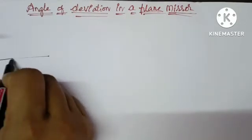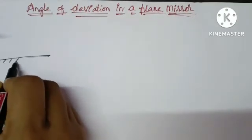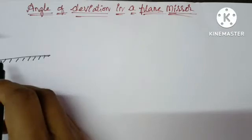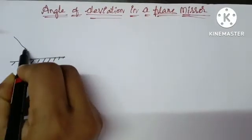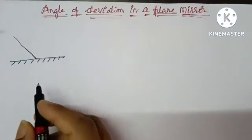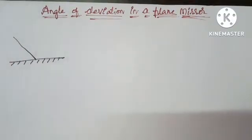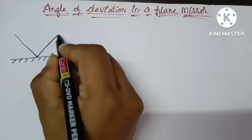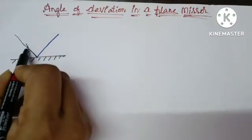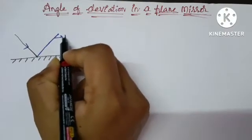For that consider a plane mirror. Suppose a ray of light incident on a plane mirror. Due to this plane mirror it reflects back into the same medium which is called reflected ray.